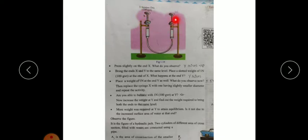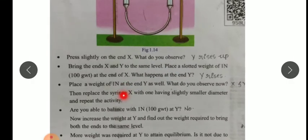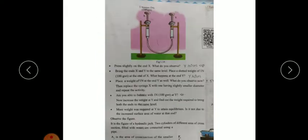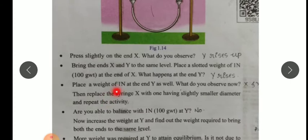Y rises up. So write the answer: Y rises. Next, bring the ends X and Y to the same level, then place a slotted weight of 1 Newton — that is, 100 gram weight — at end X. What happens at end Y? If we place 1 Newton of weight on piston X, this piston Y rises up.